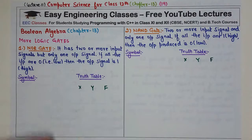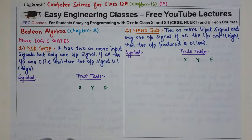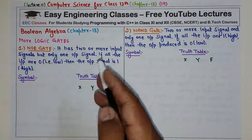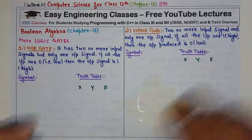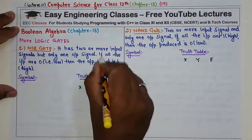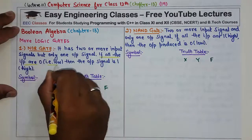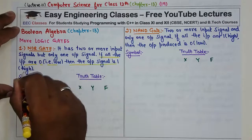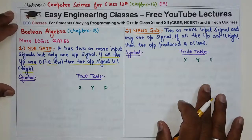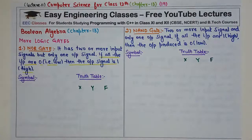Let's start with the NOR gate. NOR gate ko aap simple aise le sakti ho — ek OR gate ke aage agar NOT gate laga diya toh woh NOR gate ban jayega. The NOR gate has two or more input signals but only one output signal. Iski khasiyat yeh hai ki agar sare input zero hain, toh hi output one aayega.